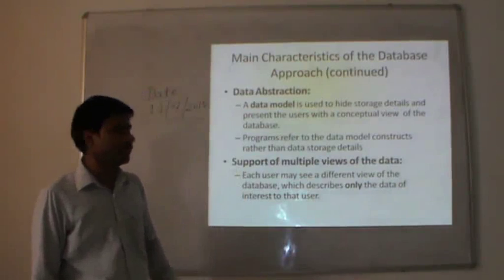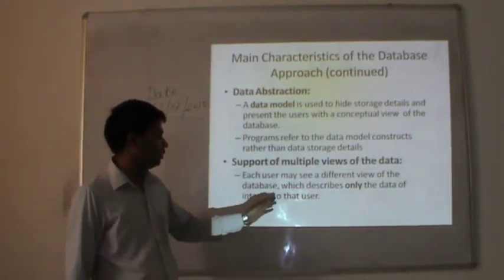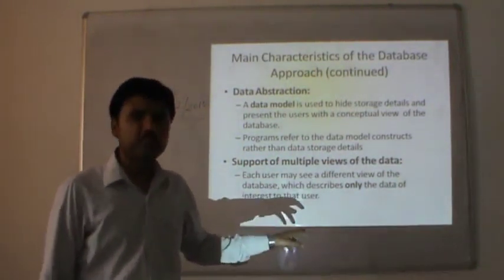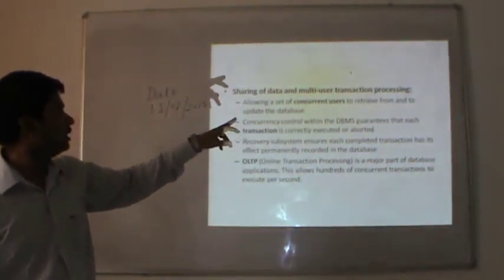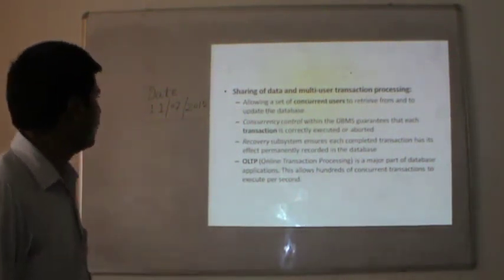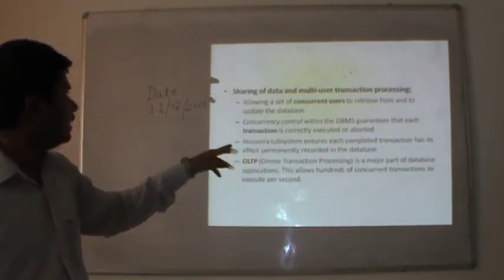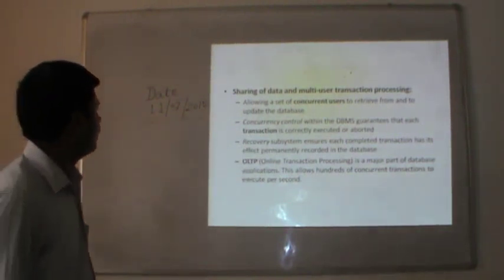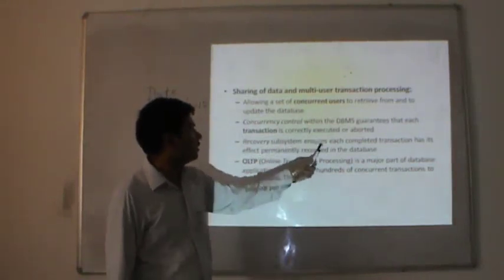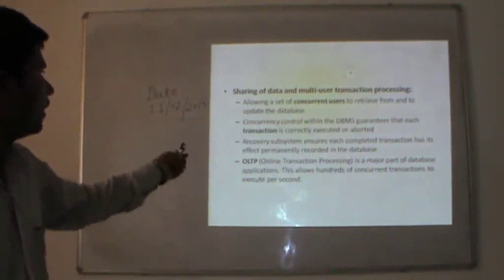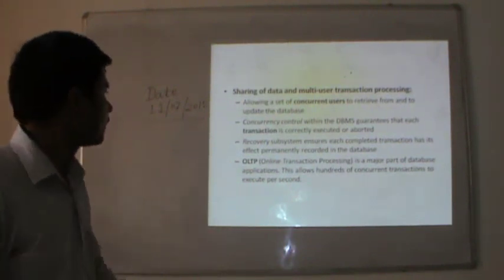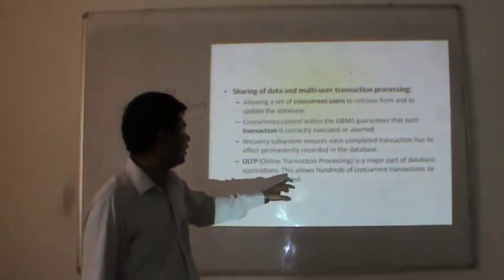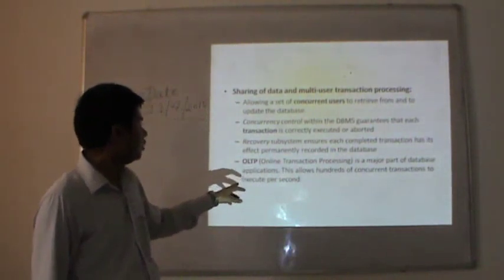Support of multiple views of the database: each user may see a different view of the database, which describes only the data of interest to that user. Sharing of data and multi-user transaction processing: allowing a set of concurrent users to retrieve from and update the database. Concurrency control within the DBMS guarantees that each transaction is correctly executed or aborted. The recovery subsystem ensures each completed transaction has its effect permanently recorded in the database. OLTP — online transaction processing — is a major part of database applications, allowing hundreds of concurrent transactions to execute per second.